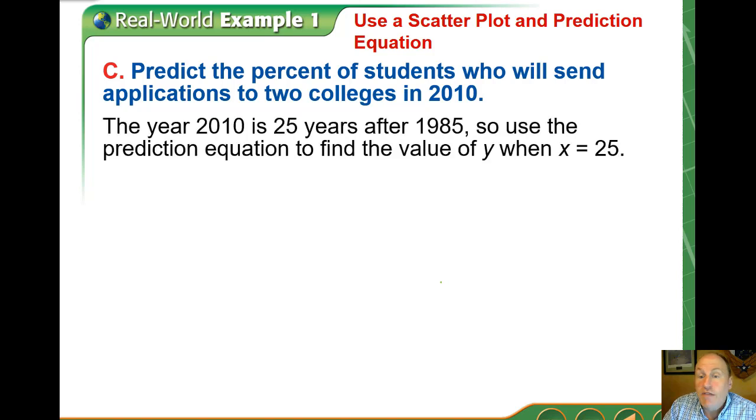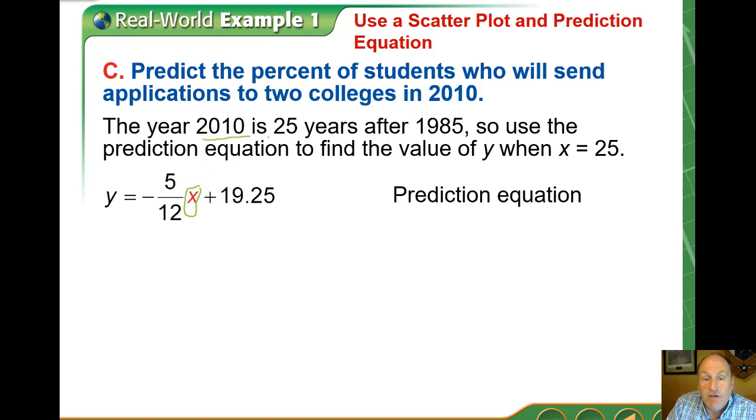The year 2010 is 25 years after 1985. So we're going to use our model with x or t being 25. We're going to substitute into our model negative 5/12 x plus 19.25. We're going to put in 25, because 2010 is 25 years after our study began.